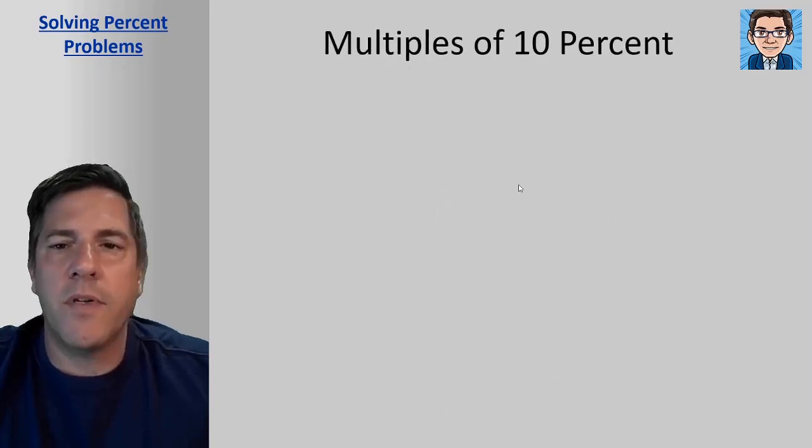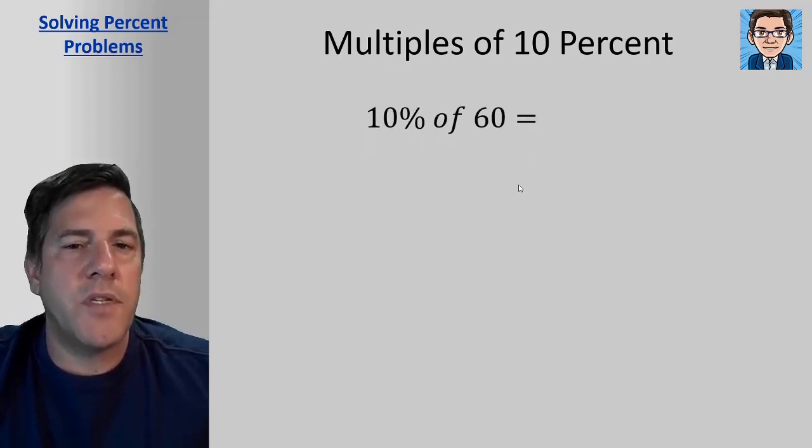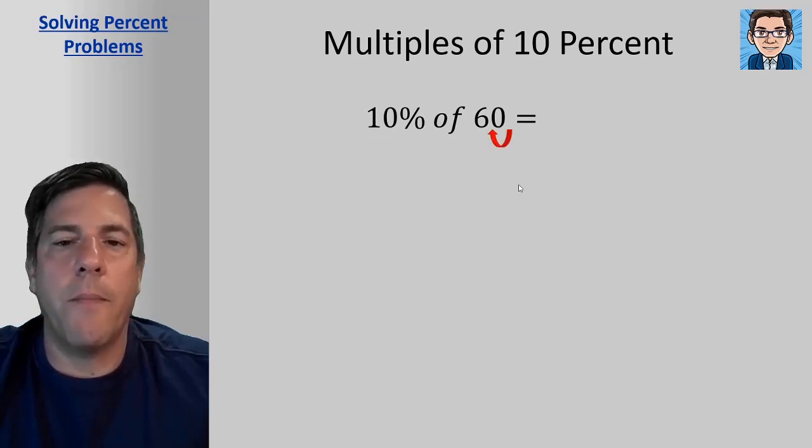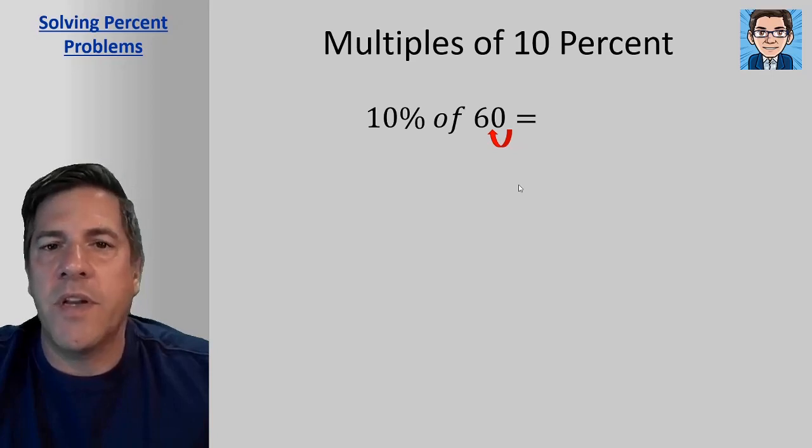Now multiples of 10 percent are easy to work with. A lot of times we can do these in our head. So if we're going to do 10 percent of 60, in order to do 10 percent, we just need to move the decimal point back one because we're taking one-tenth. 10 percent is the same as one-tenth, so that's going to be six.